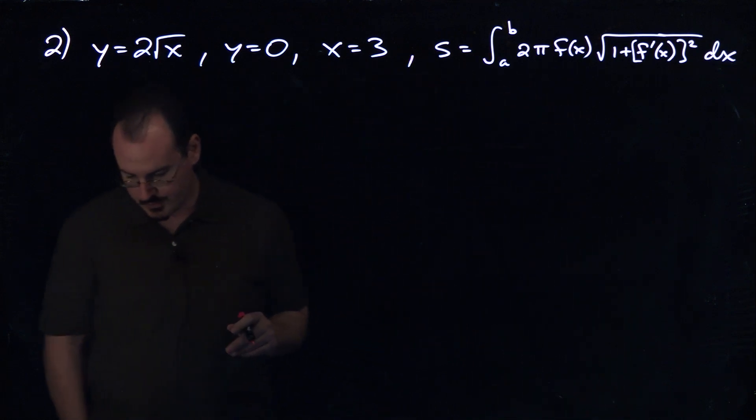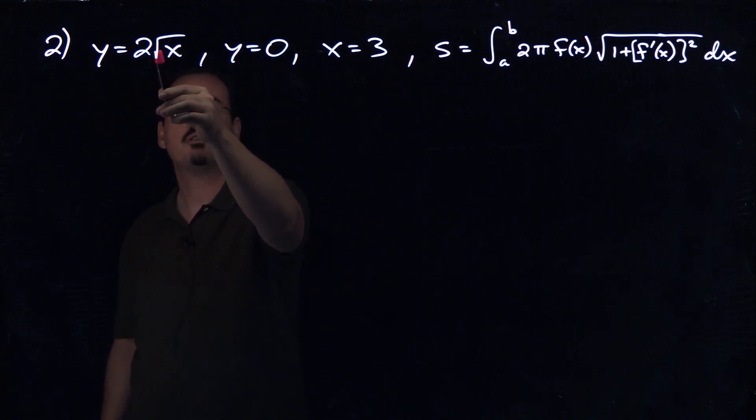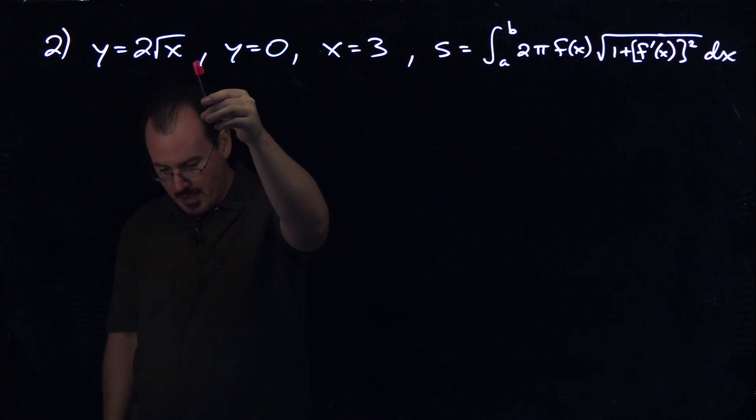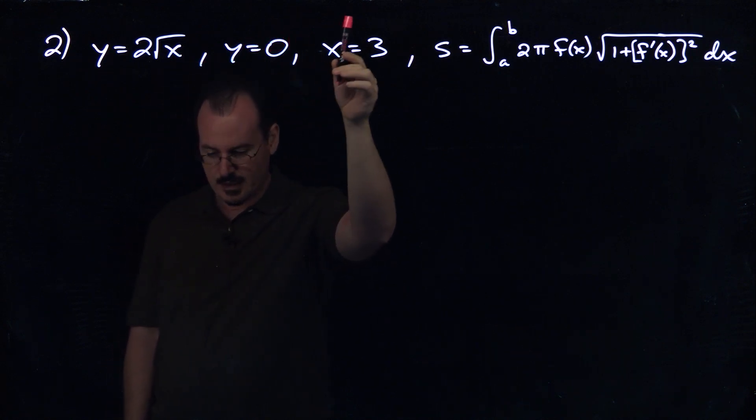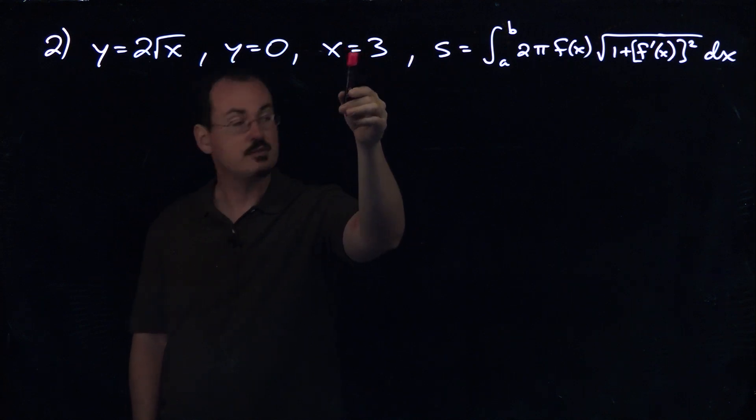Example 2 from practice exam 2. This one says to find the surface area if we revolve this function, bounded by y equals 0, the x-axis that is, and x equals 3. If we revolve this around the x-axis, find the surface area.